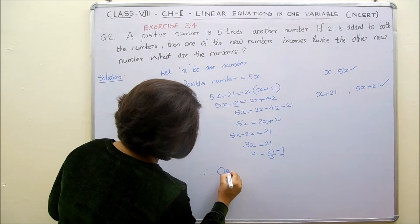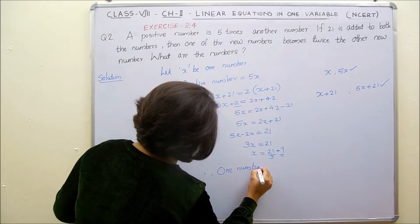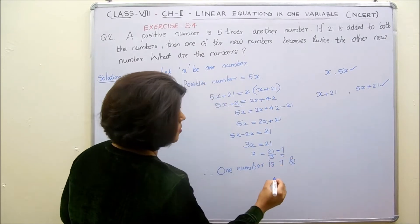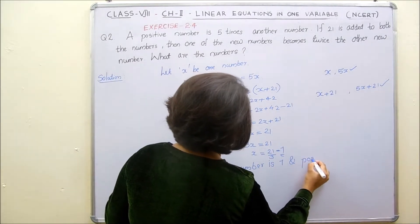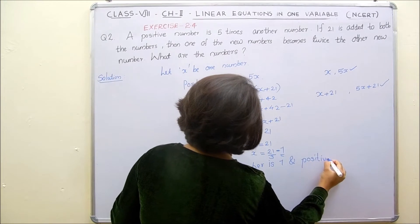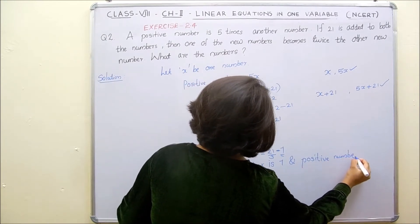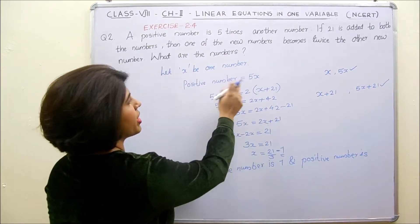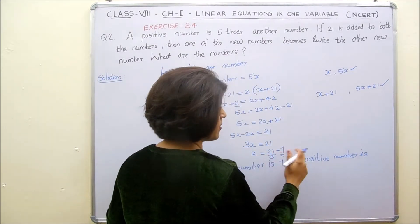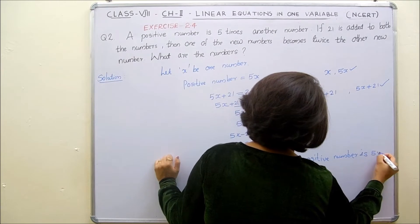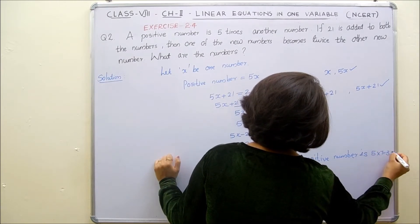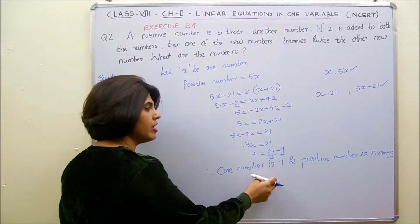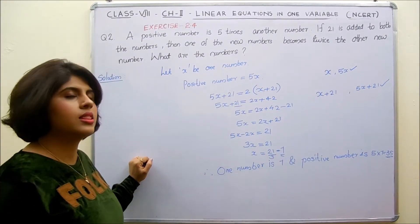Therefore one number is 7. And the positive number is 5x, that is 5 into 7 which is equal to 35. So 35 is the positive number. Therefore the first number is 7 and the positive number is 35.